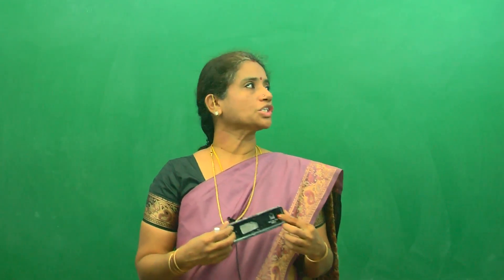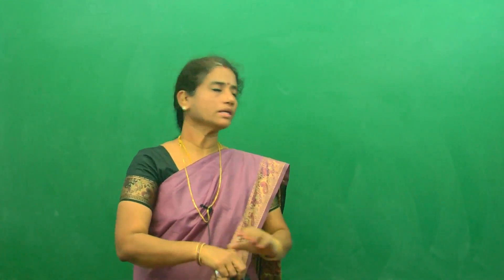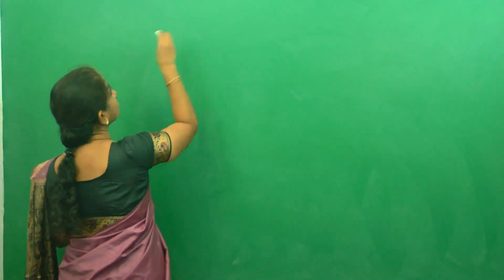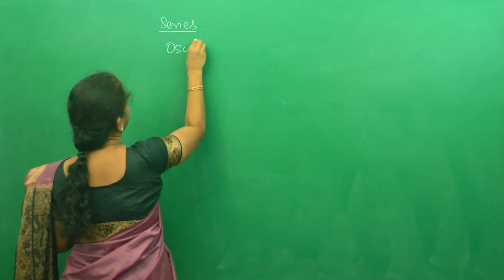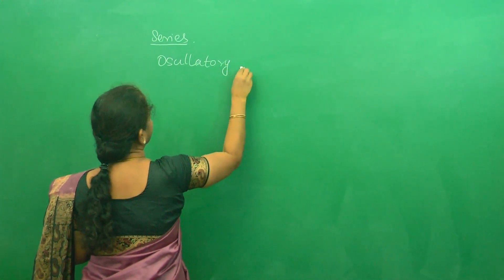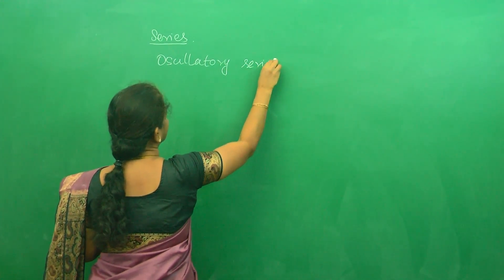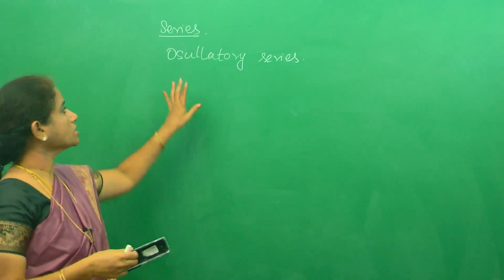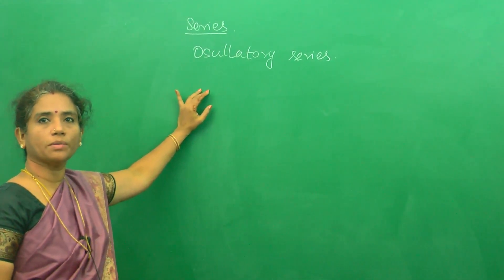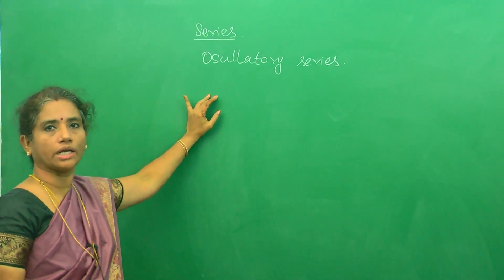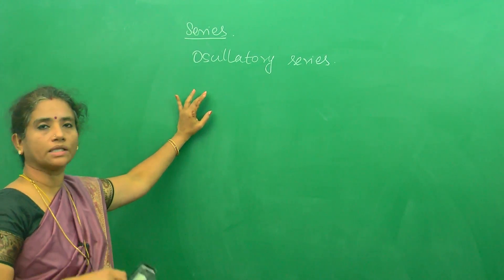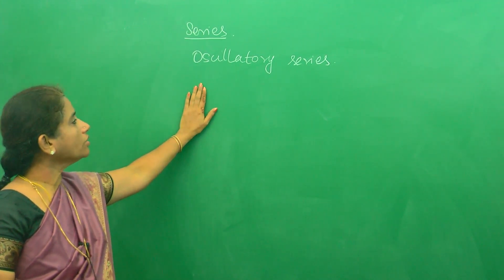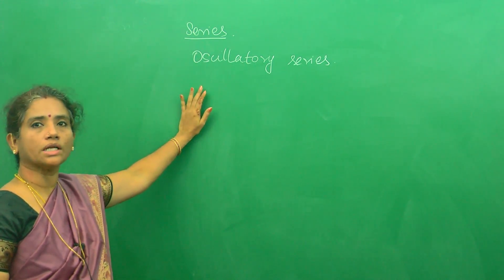Hi everybody. In this session we are going to discuss the convergence or divergence of an oscillatory sequence. An oscillating series means one term will be positive, next term will be negative, next will be positive — it will be oscillating. The first term can be negative, second is positive, third is negative, fourth is positive, and so on. We are going to discuss the convergence or divergence of an oscillatory series.